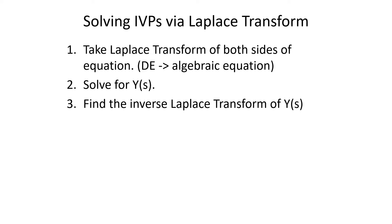To use these derivatives to solve initial value problems with the Laplace transform, we take the following steps. First, we take the Laplace transform of both sides of our differential equation. This transforms our differential equation, which has derivatives in it, to an algebraic equation. We then solve that algebraic equation for big Y(s), and then take the inverse Laplace transform of Y(s) to find little y(t).